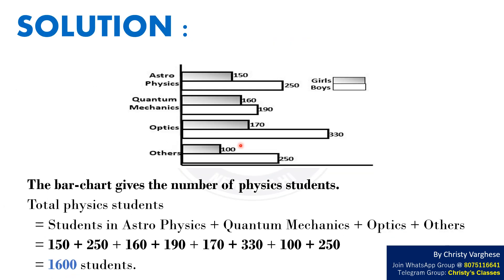Solution. The bar chart gives the number of physics students, where grey bars represent girl students and white bars represent boy students. Total number of physics students equals students in astrophysics plus quantum mechanics plus optics plus others — that is 150 plus 250 plus 160 plus 190 plus 170 plus 330 plus 100 plus 250.